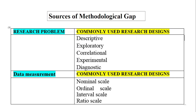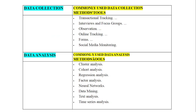Another source is data measurement. There can be different scales: nominal, ordinal, interval, or ratio scale. There are chances that in previous studies some other scales were being used, but in your study you are going to use a different scale that you think will give more accurate and authentic results — and you will have to justify that method as well.